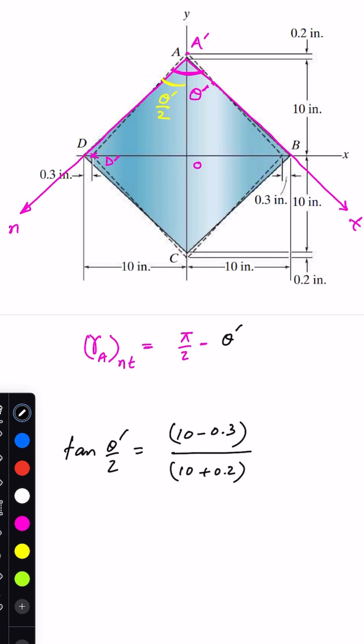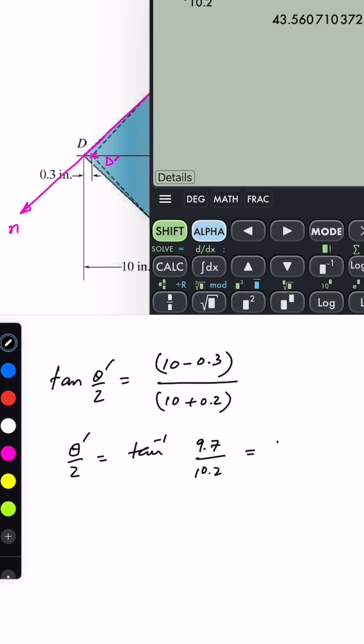We can say that theta dash divided by 2 will be equal to tan inverse of this, so tan inverse of 43.561 degrees. From this we can say that theta dash will be twice of this angle, so this answer multiplied by 2 equals 87.121 degrees. So this is theta dash.